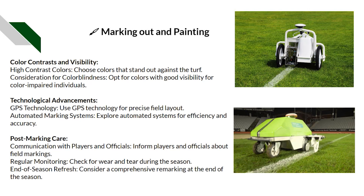Use high-contrast colours — typically white on green grass, though if there's snow you might use blue or red paint. On artificial pitches or when marking multiple pitches within one area, different colours may be needed to distinguish between them. GPS technology and robotic mowers can help with initial pitch marking, saving a lot of time — after that, you can save money by using string and a line marker yourself. Post-marking care includes informing players and officials about the field markings and whether paint is still wet.